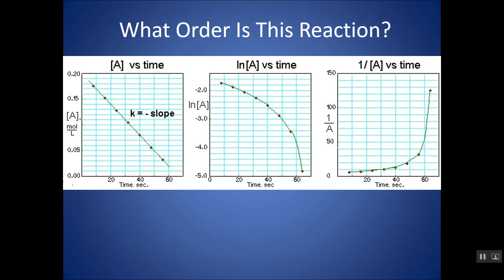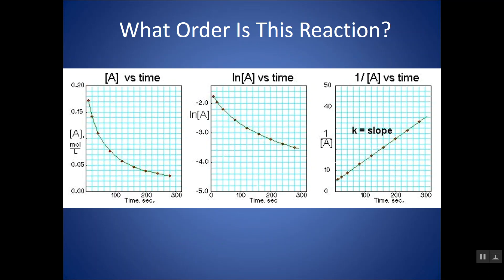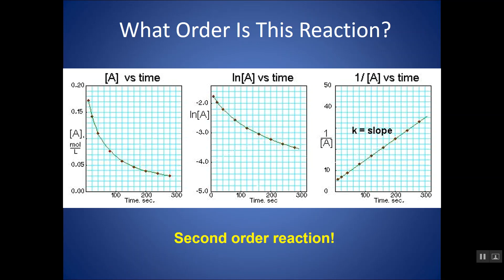Here's a different set. Where's my straight line? Here it is — concentration versus time is a straight line, so this would be a zero-order reaction. And here are those three characteristic plots, and notice this data best fits 1 over A versus time, which is the characteristic plot for second-order. So it's a really easy way of graphically determining the order of reaction with respect to a certain reactant.